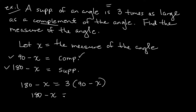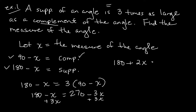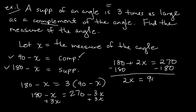Distributing: 180 minus X equals 270 minus 3X. Add 3X to both sides to get 180 plus 2X equals 270. Subtract 180 from both sides to get 2X equals 90. So X equals 45. The angle measure is 45.